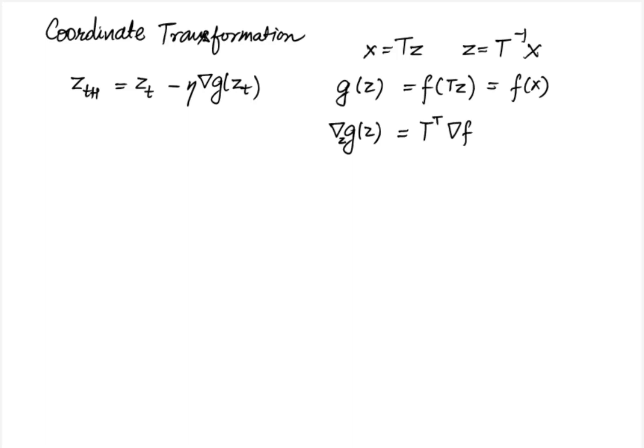Suppose you do a coordinate transformation, that is instead of operating in a given space simply use a change of variables x equal to tz or equivalently z is equal to t inverse x where t is some invertible matrix. Then the iterations in this space can be written as z t plus 1 equal to z t minus eta times gradient of g at z t where we are defining the function g of z equal to f of tz which is basically f of x. And therefore we can calculate gradient of g z as t transpose times gradient of f at tz where gradient of f denotes the gradient of f with respect to its argument not z. So the updates in the z space can be implemented as z t plus 1 equal to z t minus eta times t transpose gradient of f of t times z t.